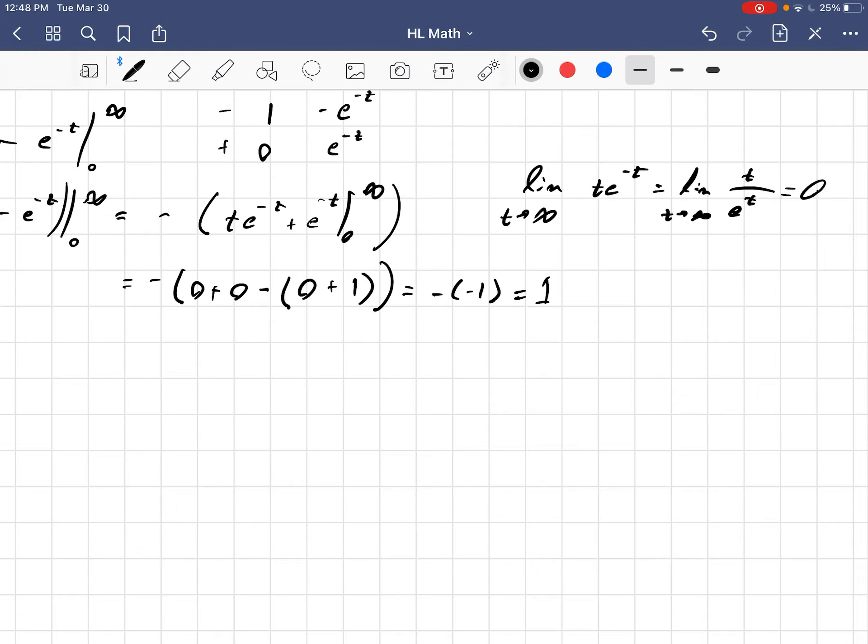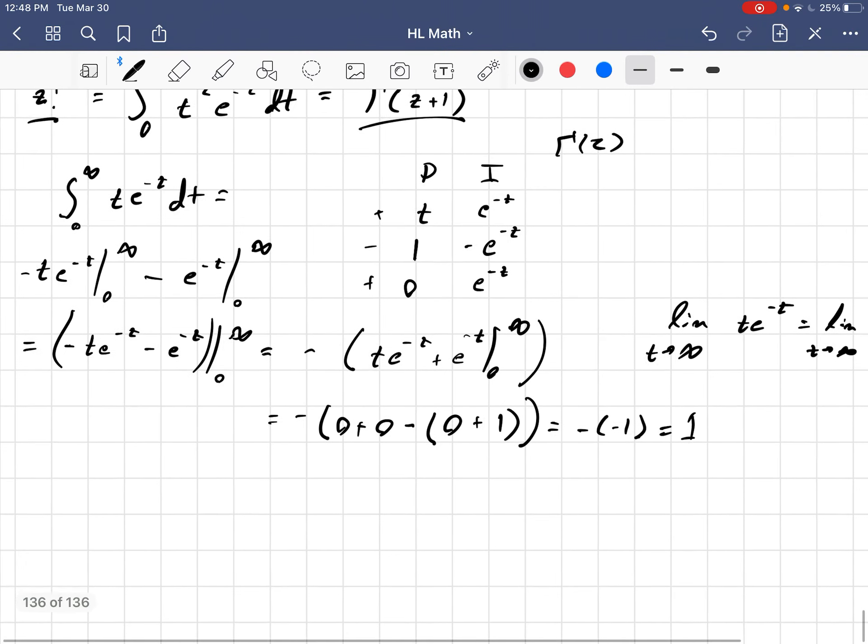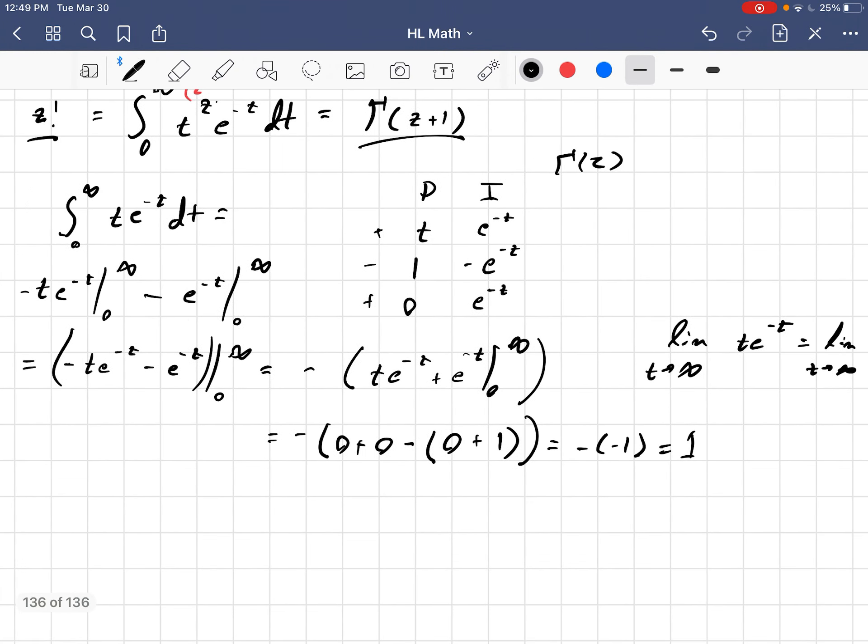Good, the negative signs didn't bite me. So, what does that tell us? This is gamma of 2, right? So, gamma of 2 is 2 minus 1 factorial, or 1 factorial, which is 1.